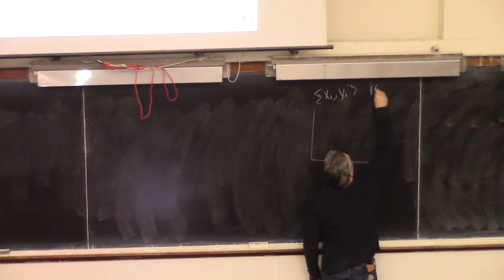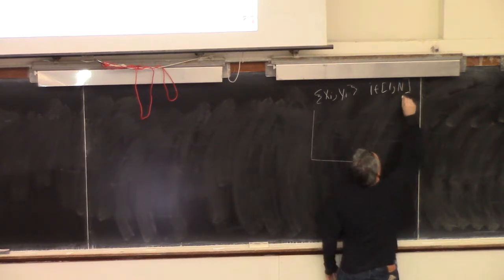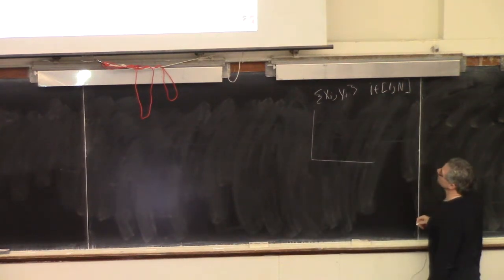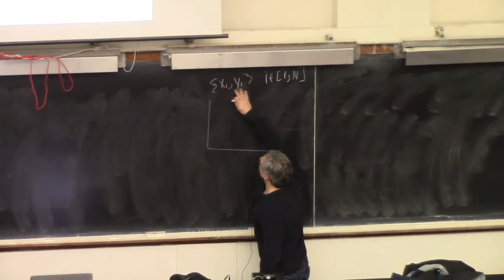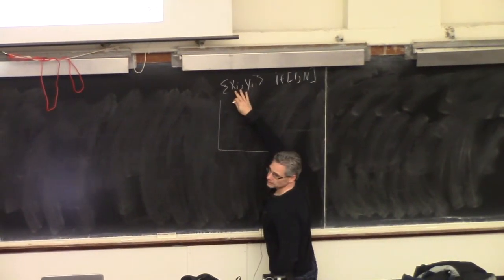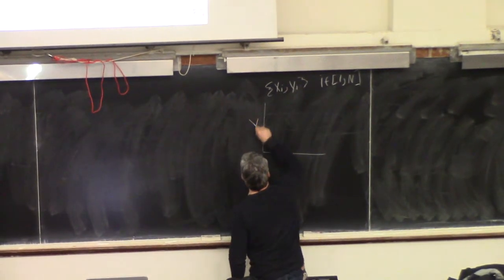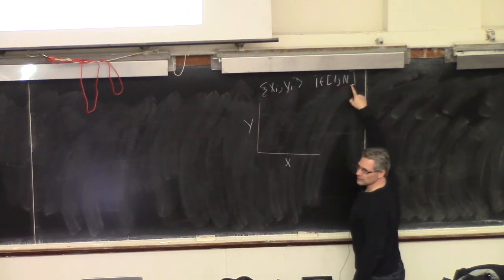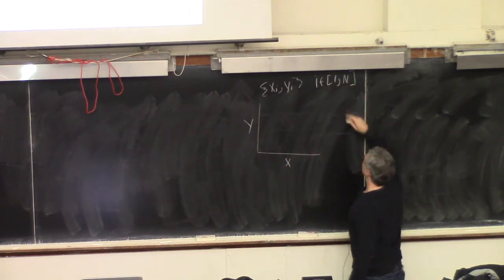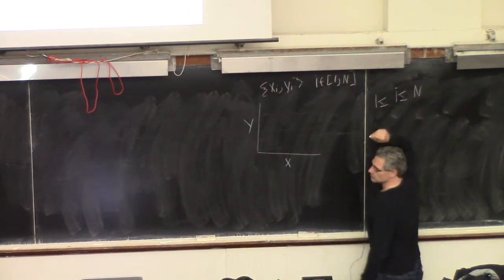I is an index — are you familiar with this kind of notation? We have a bunch of measurements of X_i and Y_i. X is considered to be the input, Y is considered to be the output, we've done N experiments. This means I is an integer between 1 and N — it means the same thing, just a little bit shorter.